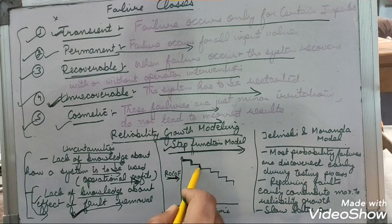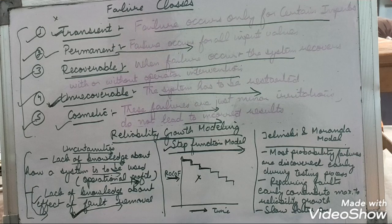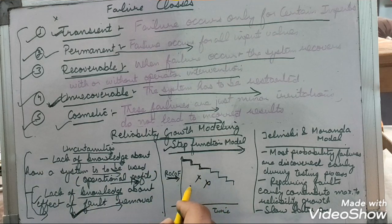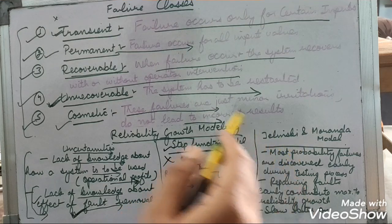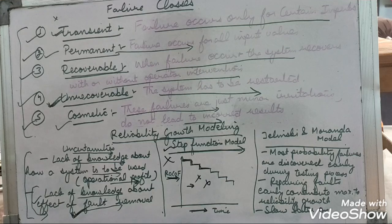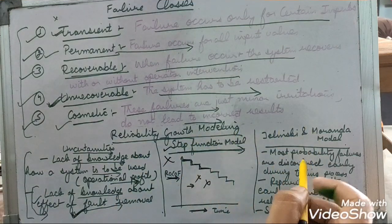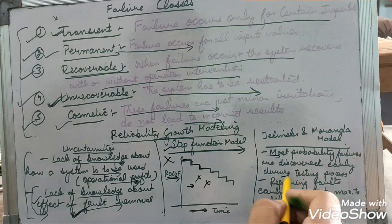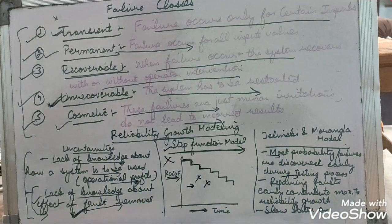After each error is removed, it leads to an increase in reliability by a constant amount. However, this is a basic assumption — as discussed, all errors have a different effect on software reliability. So this cannot be considered for practical application because each error contributes differently to reliability. This model is not practically used.